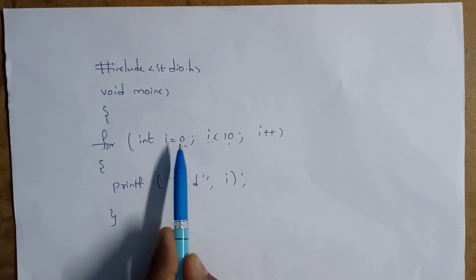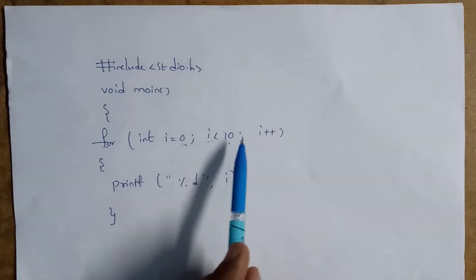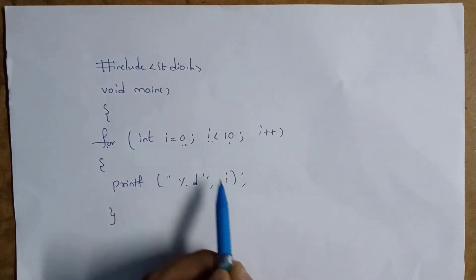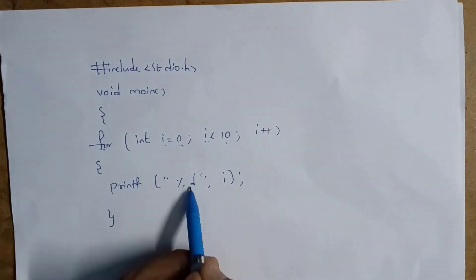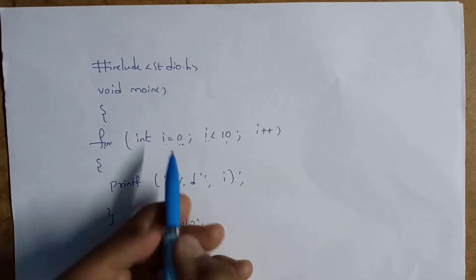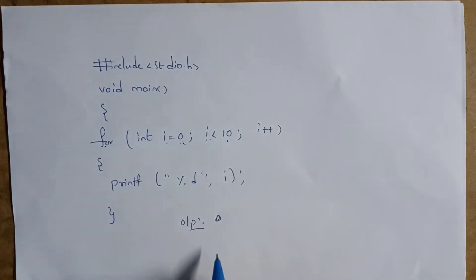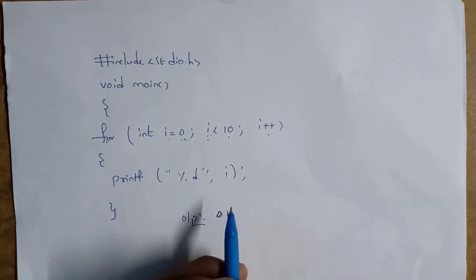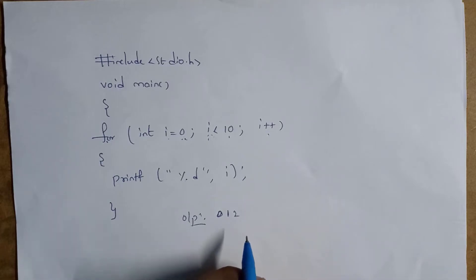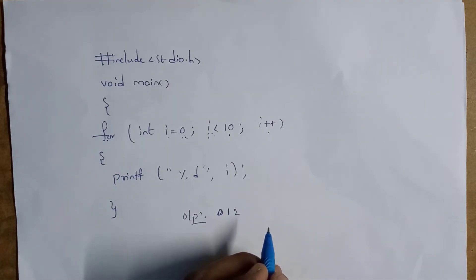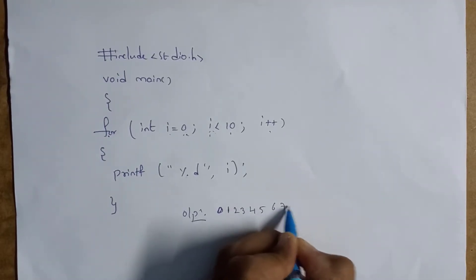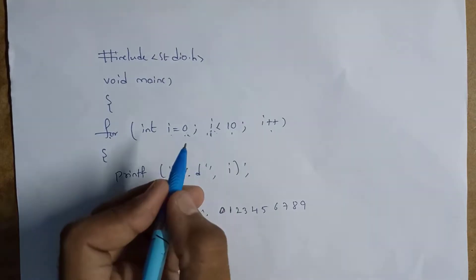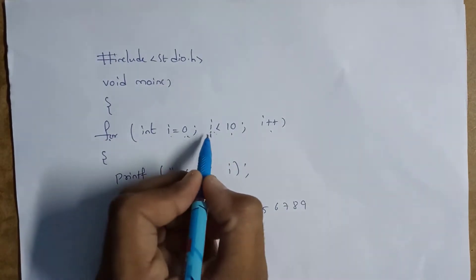Inside the for loop I written: int i = 0, i less than 10, i plus plus. To print numbers from 0 to 9 I write printf("%d", i). By writing this program, it will take value 0, which is less than 10, so it prints 0, then increments. This continues — 1, 2, 3 — until it prints up to 9. When i becomes 10, ten is not less than ten, so the loop stops.